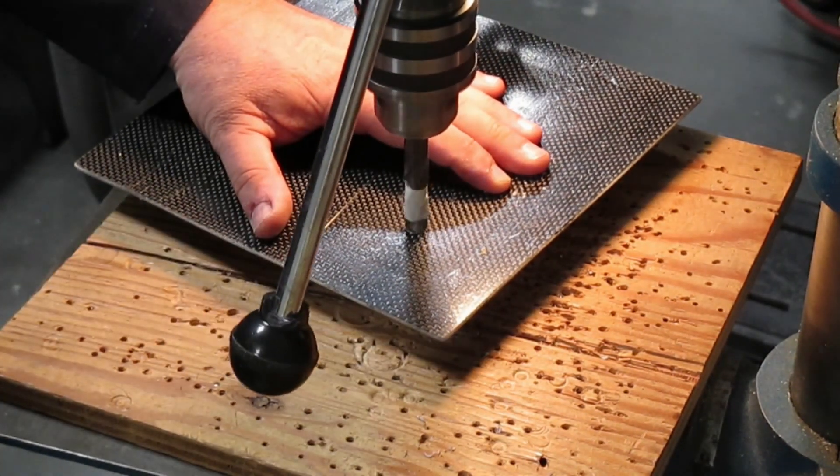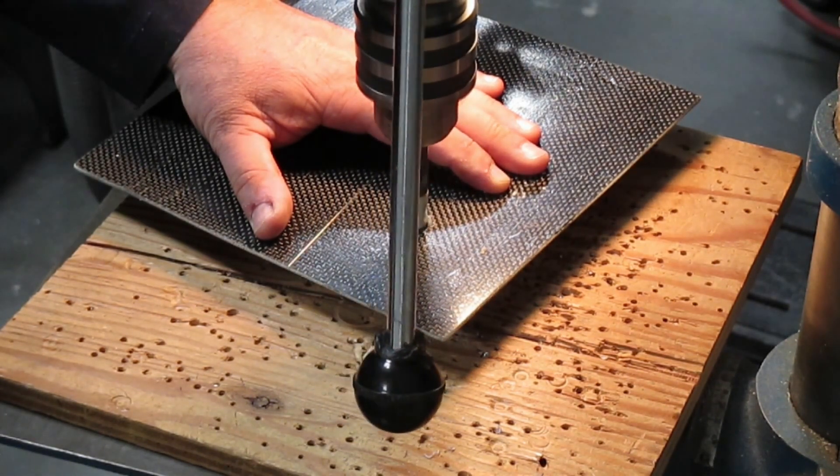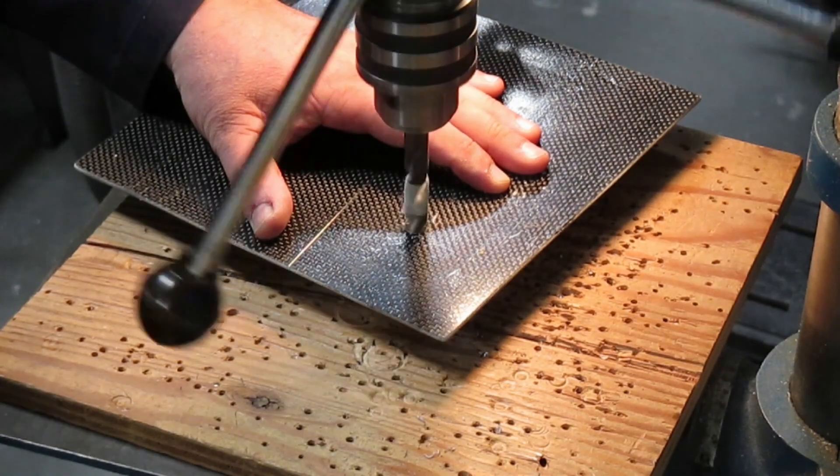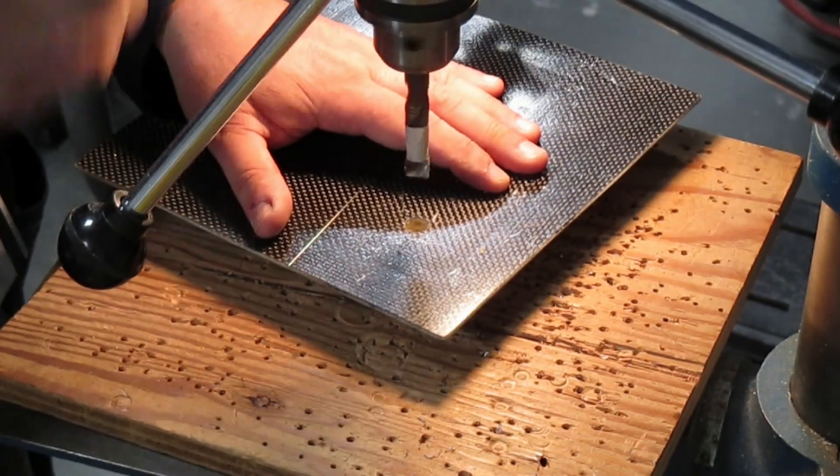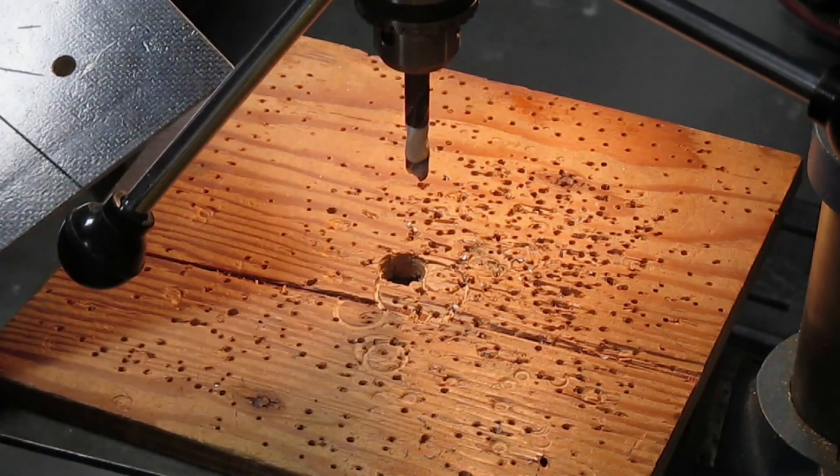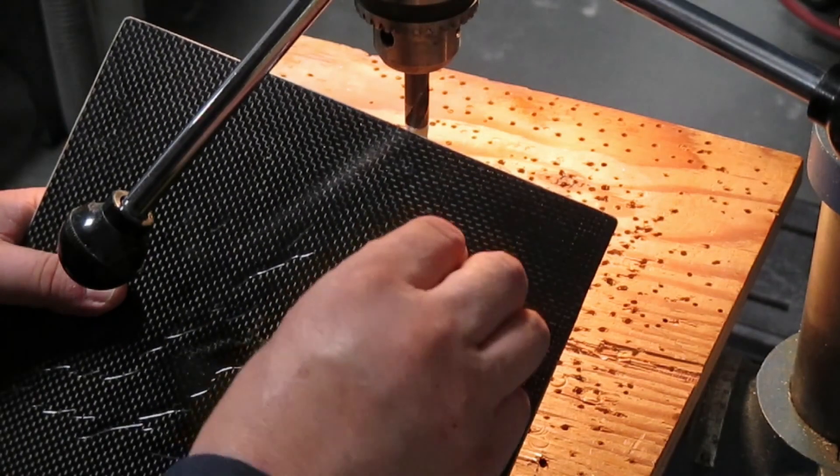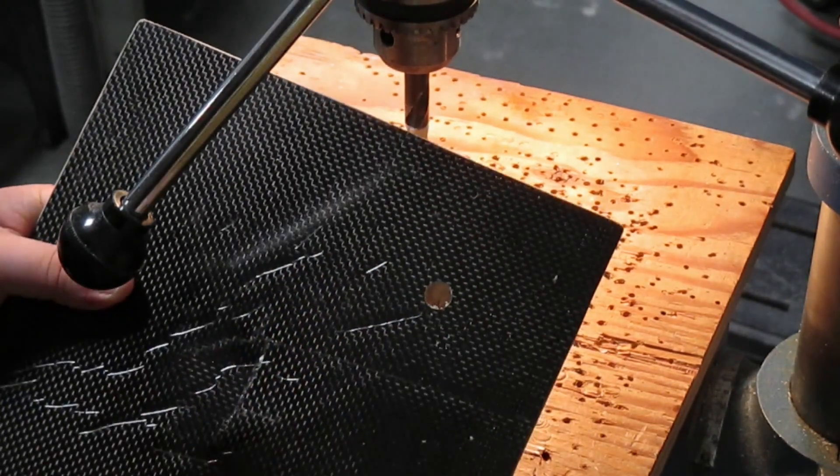Take it down to the depth that I want it to go, just about there. Now I know that it's been cut deep enough to allow my cutting tool to go in all the way and undercut.